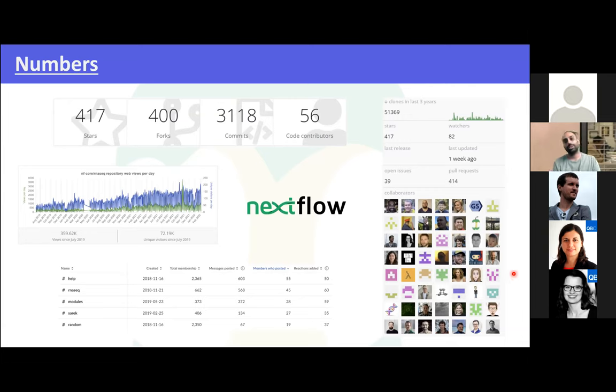Jumping directly into some numbers. So this pipeline is one of the oldest and most popular pipelines on NFCORE. I mean, the numbers are just staggering, and they always surprise me when I see them. So, we've got 400 forks, almost 60 contributors. It's also almost 700 people on Slack. And it's also one of the most active channels on Slack where people are reaching out for help and coming to ask questions, and also just as a forum to discuss the pipeline as well.